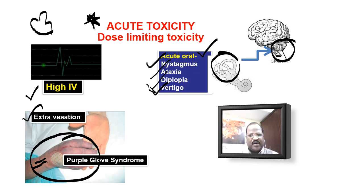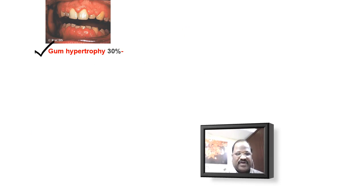Now we are going to study the important chronic adverse effects of phenytoin. Some epileptic patients take phenytoin chronically — say one year, two years, three years — at a normal dose. On chronic therapy, the most common side effect is gum hypertrophy. It is very, very important. Why is there gum hypertrophy? It is due to collagen accumulation in the gums, resulting in gum hypertrophy. It is the most common adverse effect of phenytoin on chronic therapy.